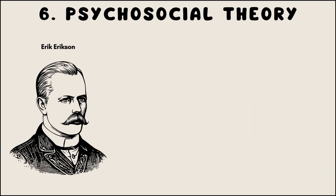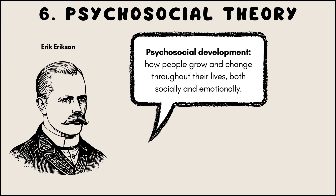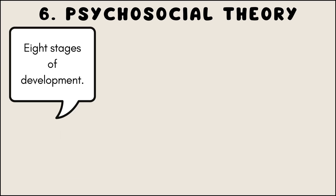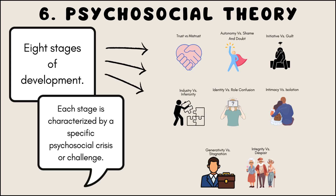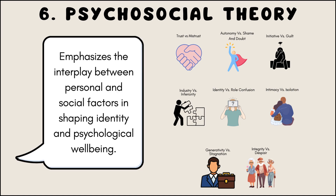Psychosocial theory, developed by Erik Erikson, focuses on the psychosocial development of individuals across their lifespan. It suggests that individuals go through eight stages of development, each characterized by a specific psychosocial crisis or challenge. This theory emphasizes the interplay between personal and social factors in shaping an individual's identity and psychological well-being.